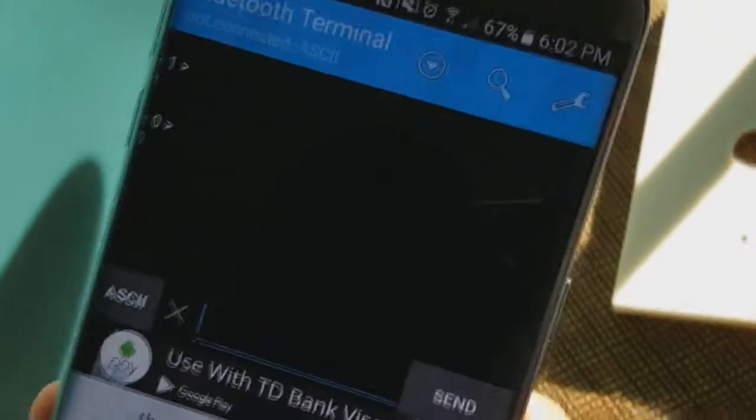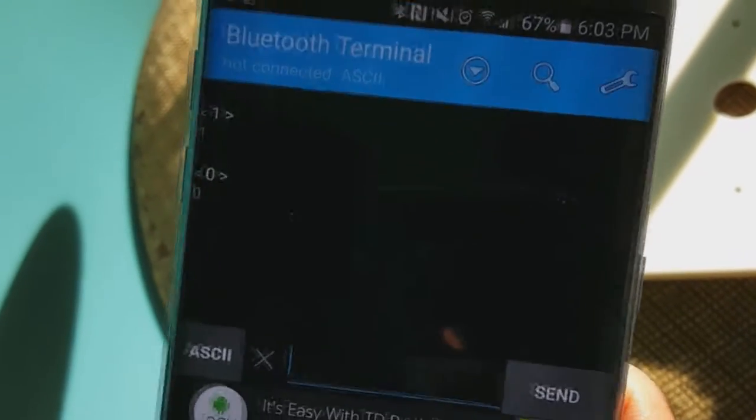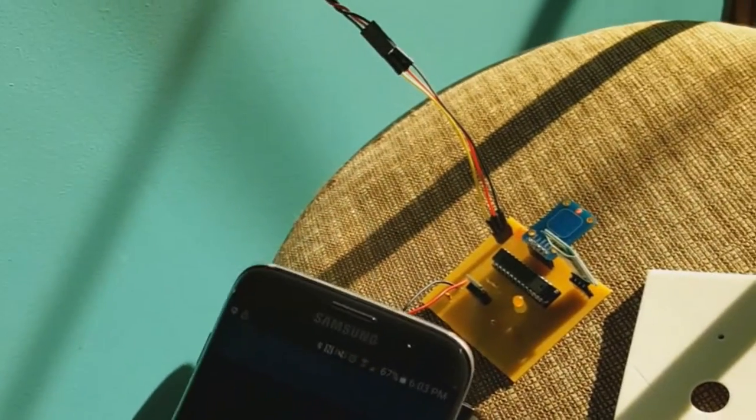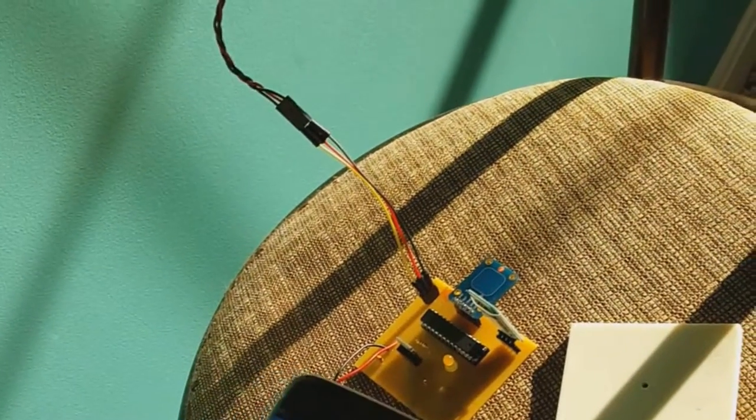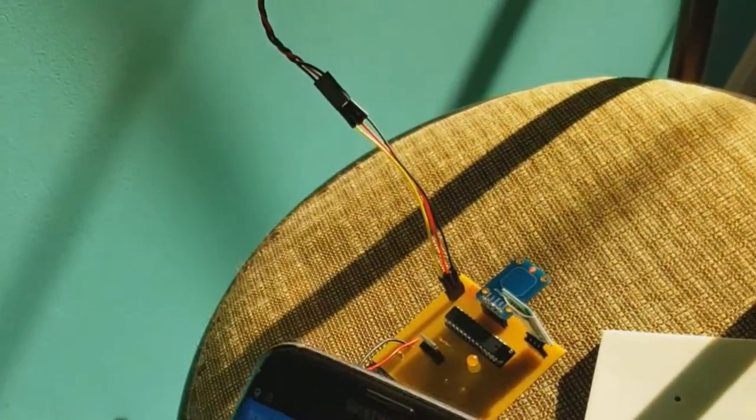So lastly I just want to show how the phone, this is just a simple Bluetooth terminal app and basically you can just send a number and it'll send it to this Bluetooth thing. So let's just go ahead and connect to it. In the final version we would actually have an actual app that would be just like a light switch or something.